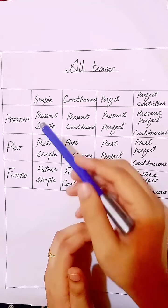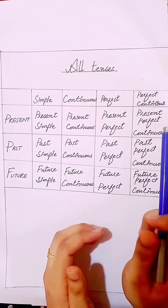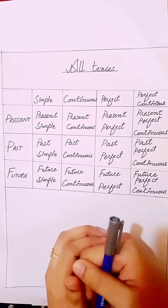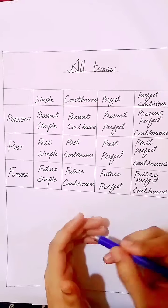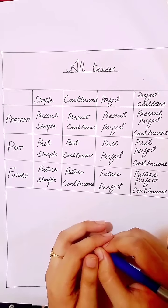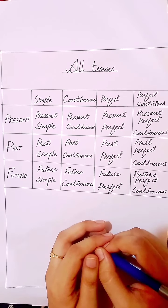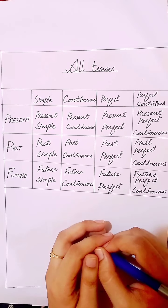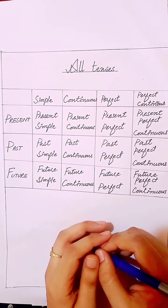There are three times — present, past, and future — and four aspects: simple, continuous, perfect, and perfect continuous. The time and the aspect combined make all 12 tenses in English. The present time and the simple aspect make the present simple tense. Then we have the present continuous, present perfect, and present perfect continuous tense. In the same way, we can make tenses with past and future times as well.